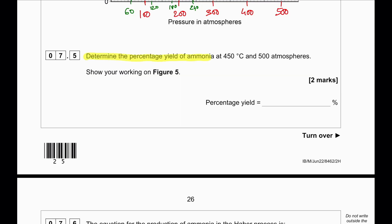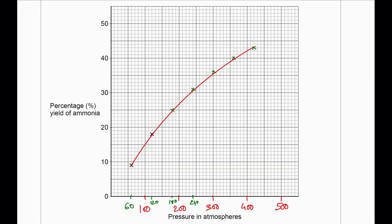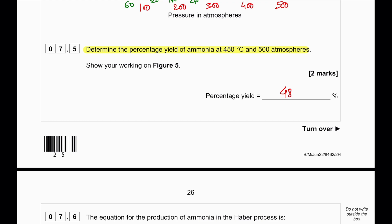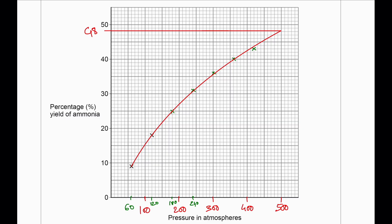Determine the percentage yield of ammonia at 450°C and 500 atmospheric pressure. To determine this, we extend the existing graph up to 500 atmospheres, giving us an approximate yield of 48%. The question says we must show our working, so we extend the line and then extrapolate.